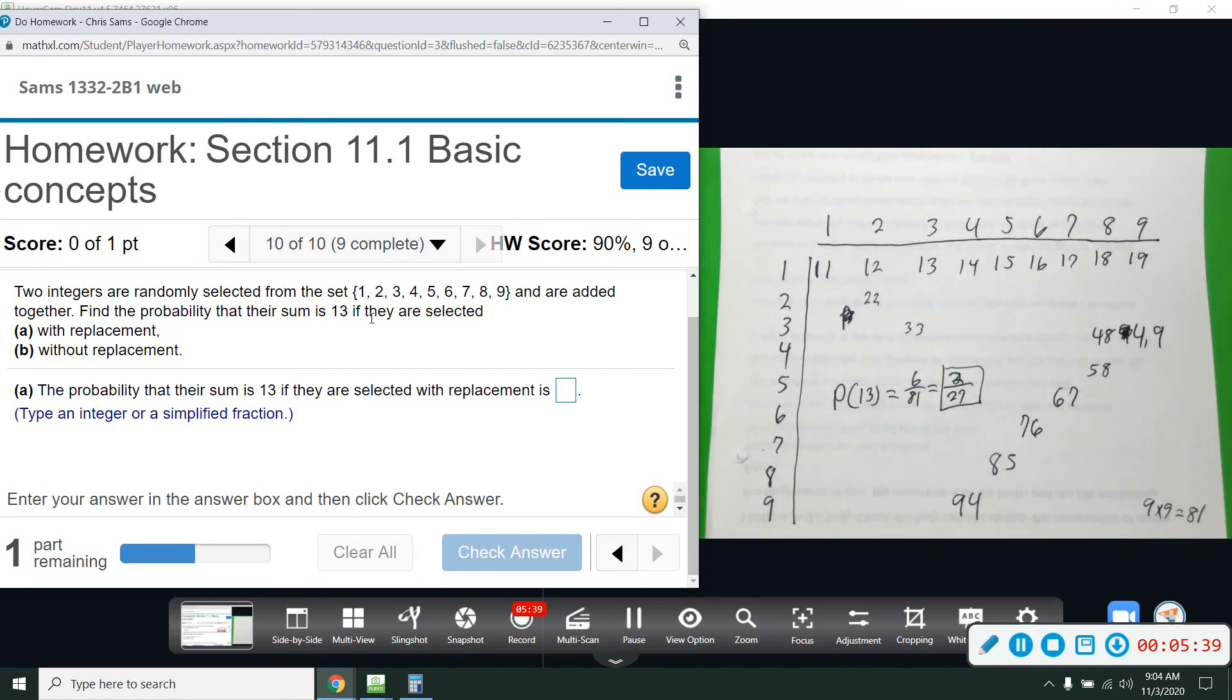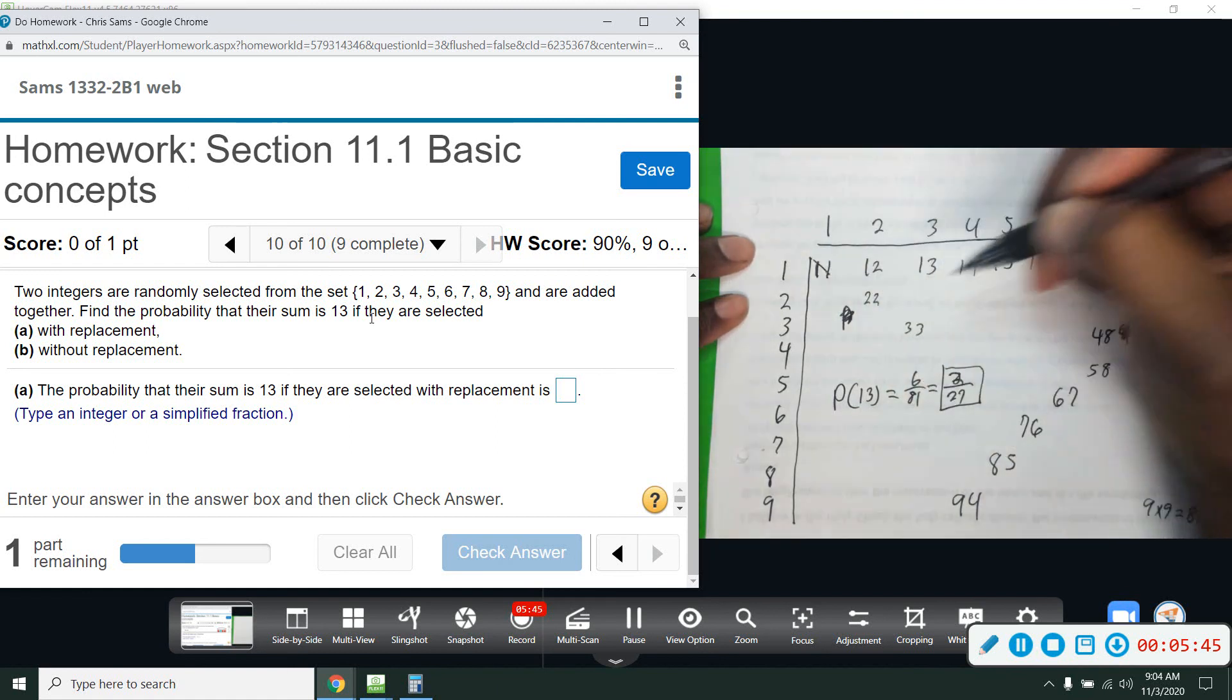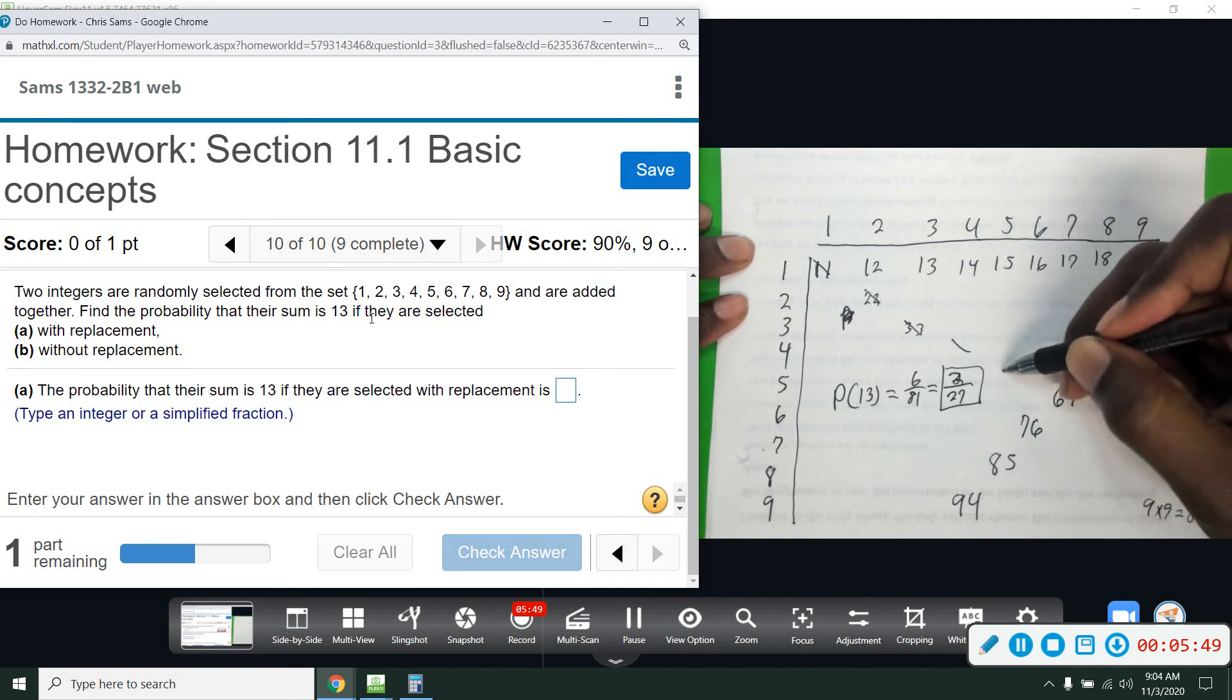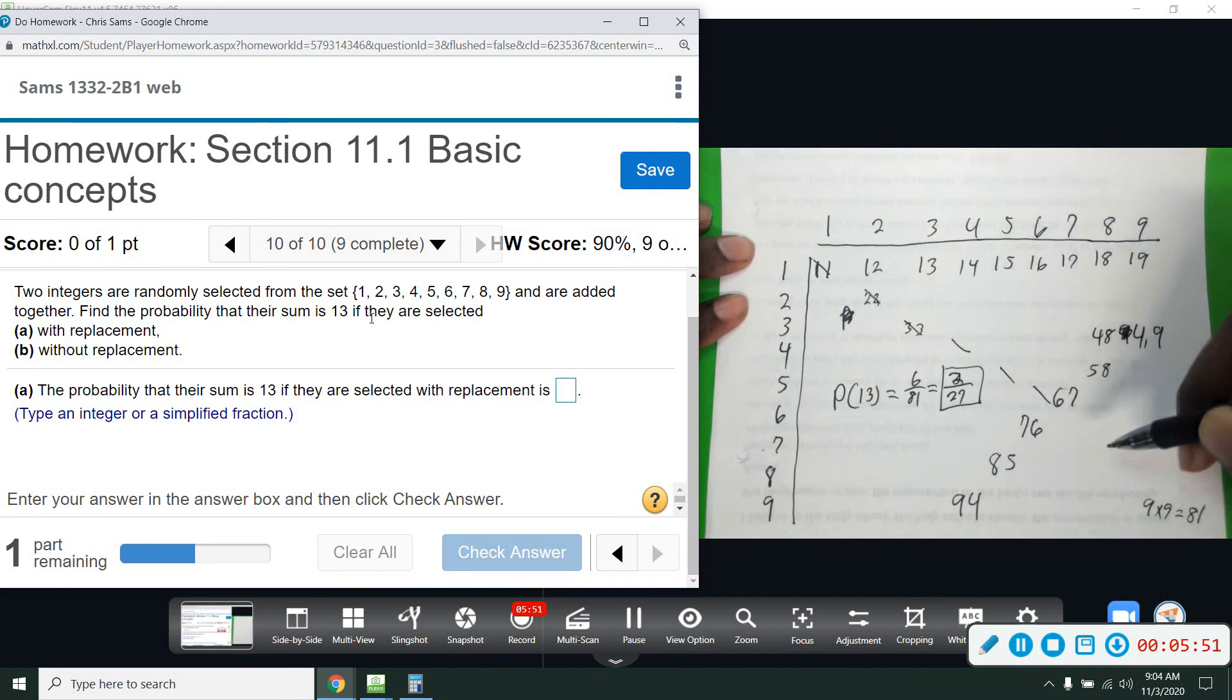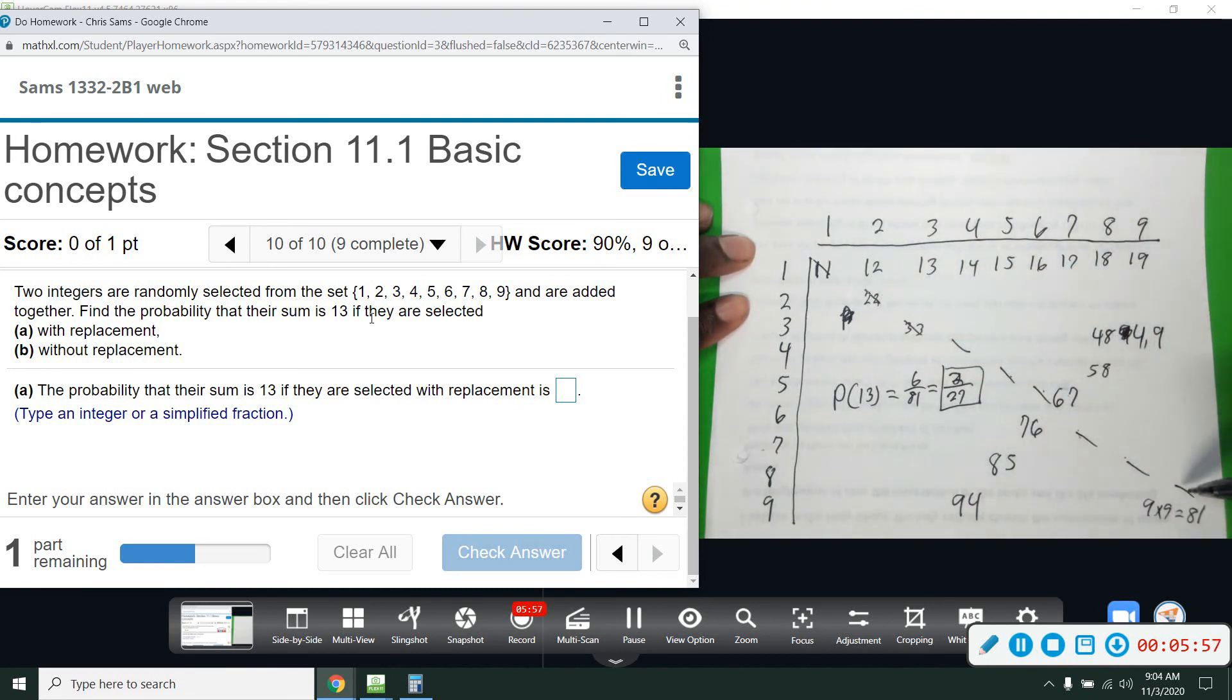Now, part two says without replacement. So without replacement, we're going to get rid of the repeat. So that means the one, one, we're not going to use it. Two, two, three, three, four, four, five, five, six, six, seven, seven, eight, eight, nine, nine. So that's one, two, three, four, five, six, seven, eight, nine numbers.